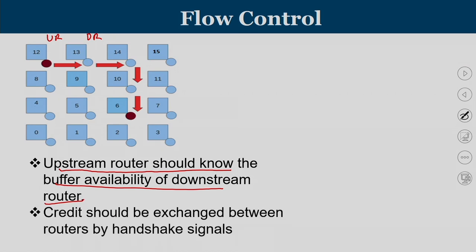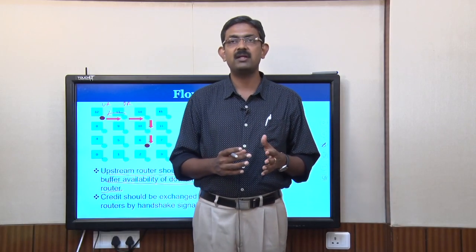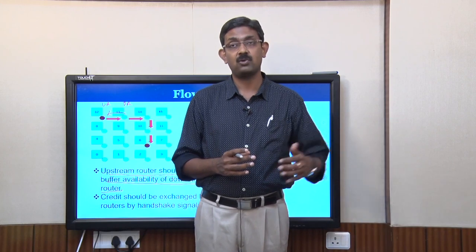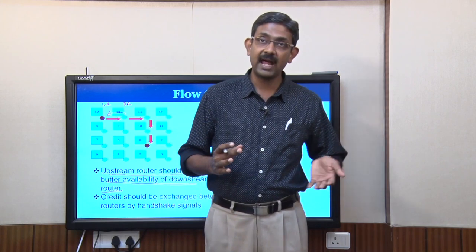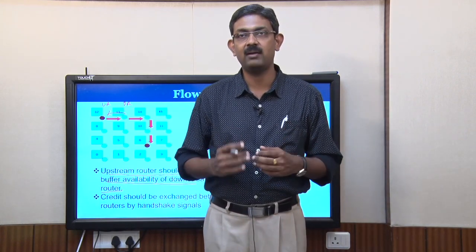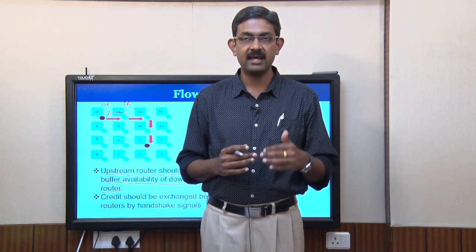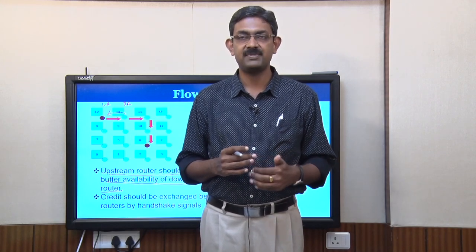Credits should be exchanged between routers — router 13 should send a feedback signal back to 12. This feedback mechanism exists between every router and its neighbors because packets can come from any one of its neighbors. Flow control is a process by which an upstream router knows whether there is a buffer available in the next router or not. If the buffer is available, a packet can be forwarded. If the buffer is not available, the packet is retained and the same process is tried in subsequent cycles.